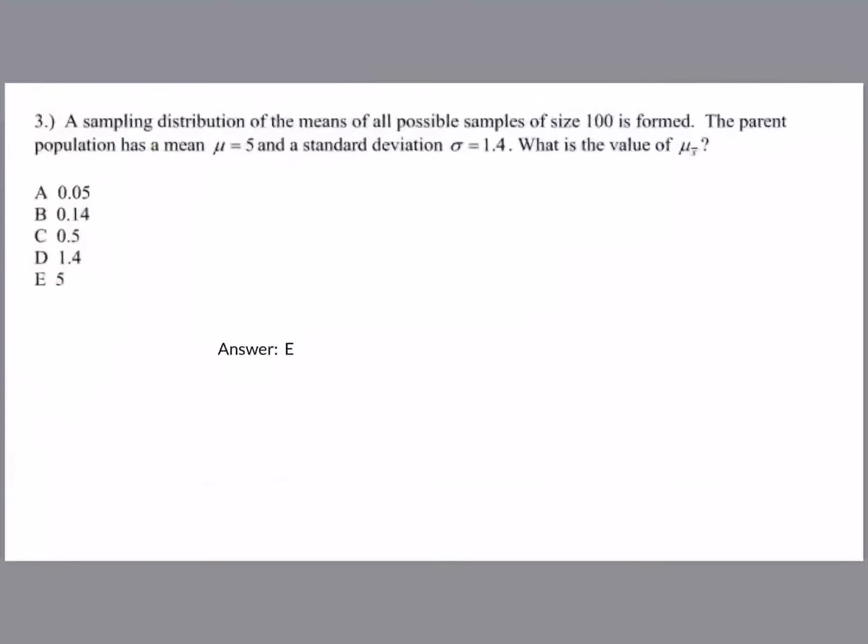Question 3. A sampling distribution of the means of all possible samples of size 100 is formed. The parent population has a mean μ = 5 and a standard deviation σ = 1.4. What is the sampling distribution of means?